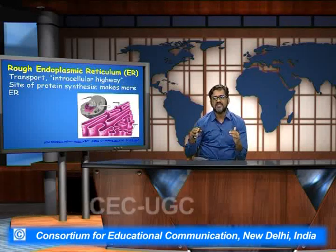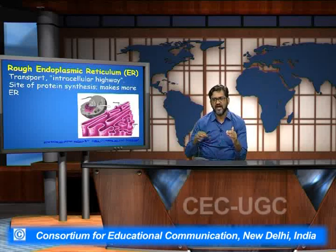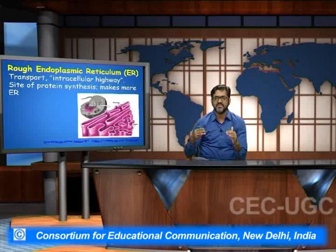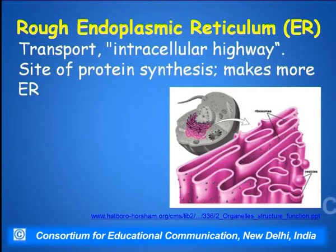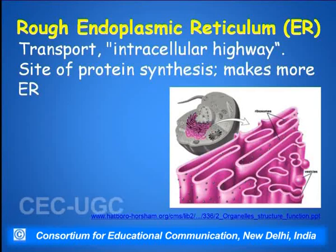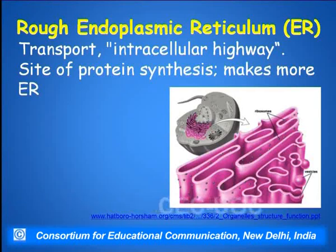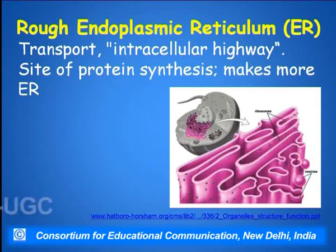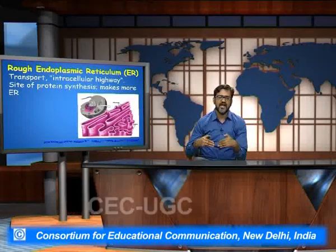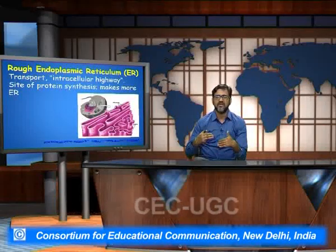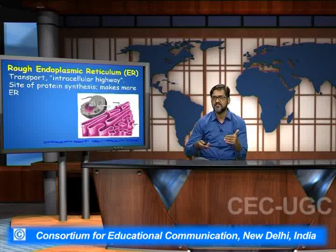As proteins are formed from these mRNAs, which are the messenger RNAs, the protein formed through the translation process gets into the endoplasmic reticulum. There is a signal hypothesis which explains how exactly the protein gets into the endoplasmic reticulum and how exactly the sorting takes place.